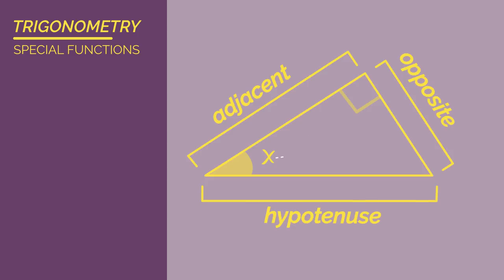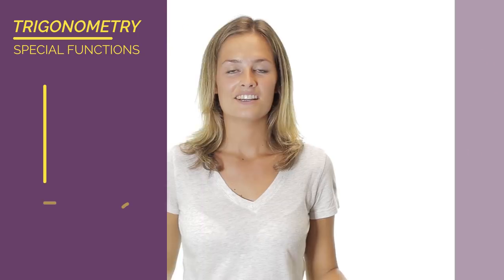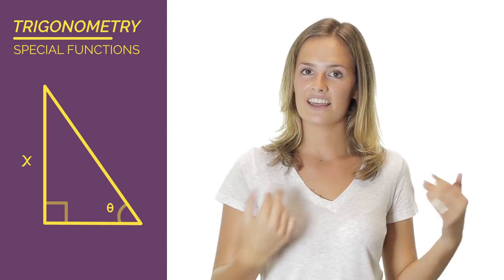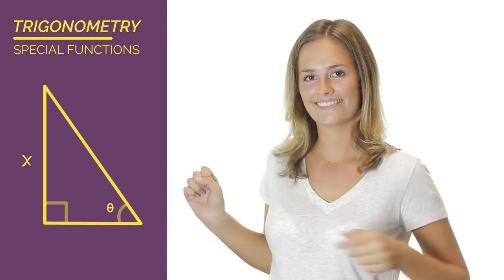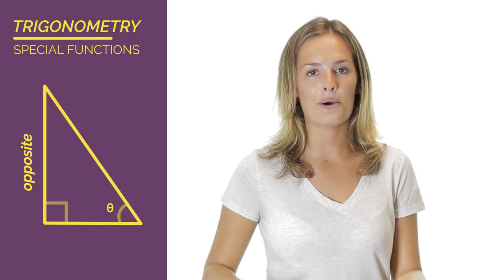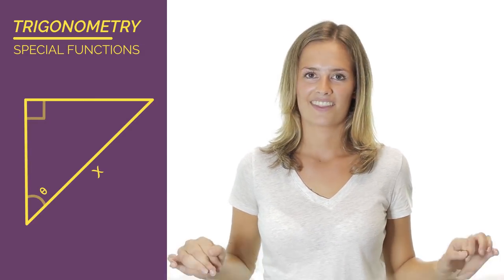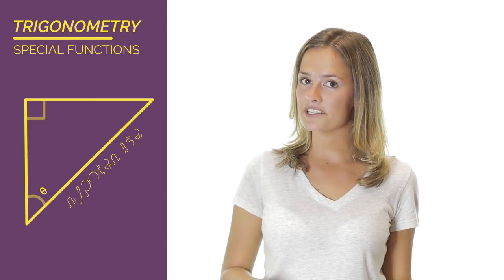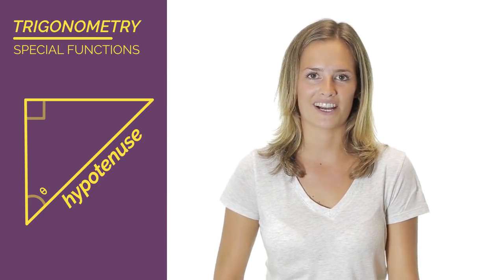See how when we change the angle the adjacent and the opposite move? So is this side the adjacent, the hypotenuse, or the opposite? It's the opposite because it is opposite the angle. What about this side? It's the hypotenuse because it's the longest side and it's across from the right angle.